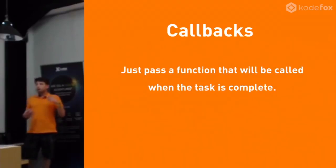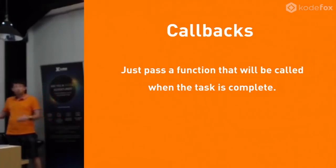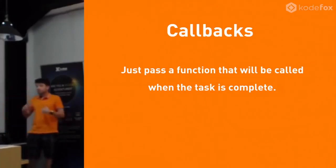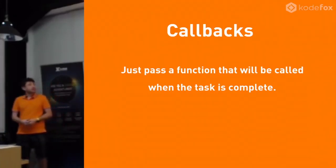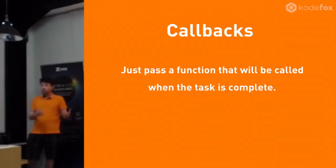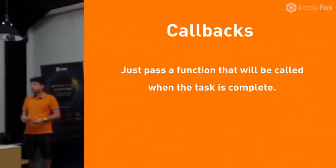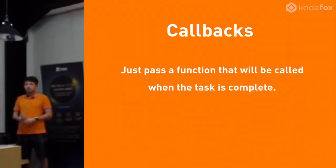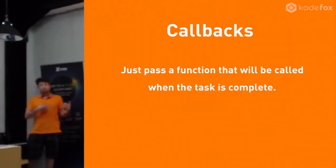So how do we write concurrent software without blocking? Generally in JavaScript, we use callbacks. We just pass a function, and when the task is finished, JavaScript will call our function. That would be, for instance, an onClick event - you pass a function to the browser, and whenever a user clicks a button, your callback gets fired and executed. Similarly, with a network request, you're waiting for the network request to finish and then the callback happens.